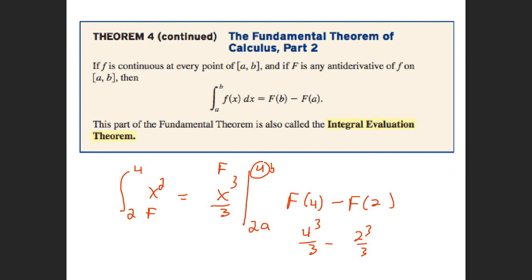I should work it out. 4 to the third is 64, so this is going to be 64 thirds minus 8 thirds. If I subtract that, I get 56 thirds. That is the area underneath that curve — the exact area.